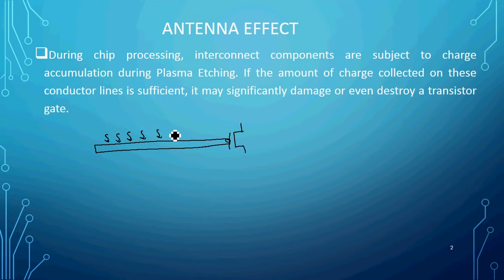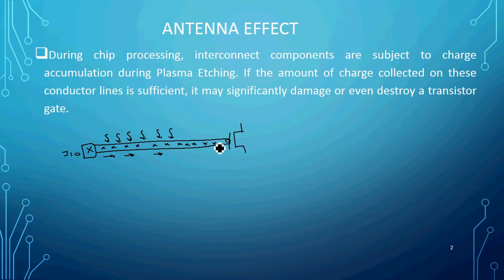The charge accumulated is a positive charge, not negative. These charges accumulate in the entire lengthy metal, which is connected as an input pin. The charges will flow through a low-resistive path. Since the other direction is an open circuit, the low-resistive path leads only toward the gate. The entire induced charges directly go and hit the gate terminal. Too much charge hits the gate terminal, and as a result, the gate oxide will be damaged permanently. This is the cause and problem of antenna effect.